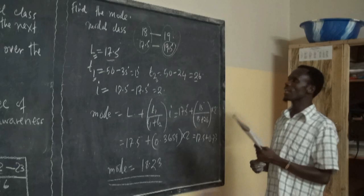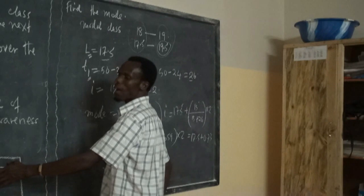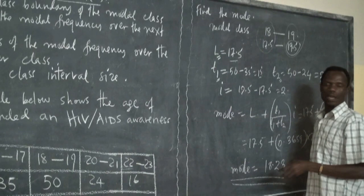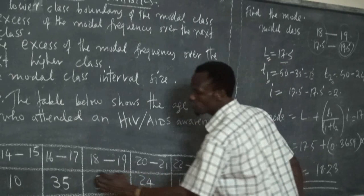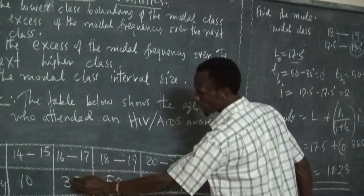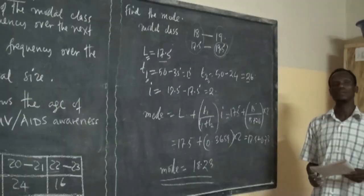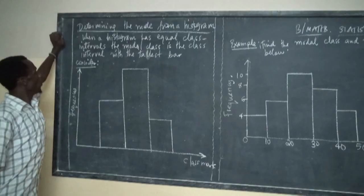The most important step is to first determine L from the modal class — the class with the highest frequency. From there, you obtain T1 to the left and T2 to the right: T1 = modal frequency minus the frequency of the class to its left; T2 = modal frequency minus the frequency of the class to its right. Then substitute into the formula.